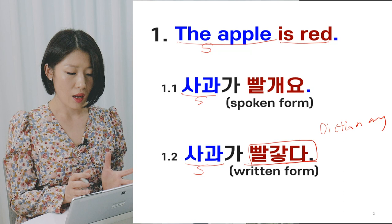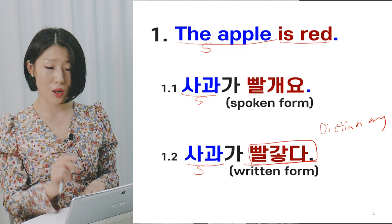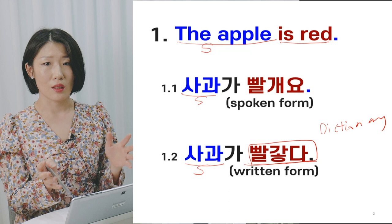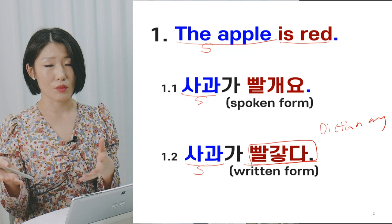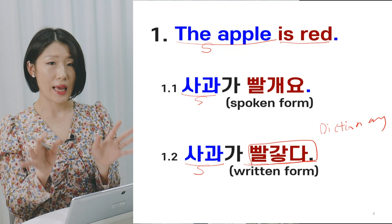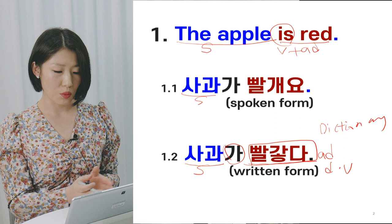Unlike English, Korean adjectives mostly function like verbs — they describe the subject like a verb, so they can be conjugated with other components like tense or speaking style. To prevent confusion, this kind of Korean adjective is also called a 'descriptive verb.' The word 가 in Korean is a subject marker — because the order of sentence components like subject or object is not very important as in English, markers have been developed to indicate them.